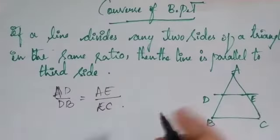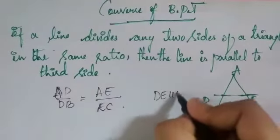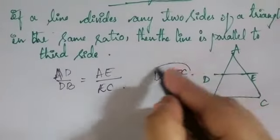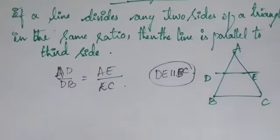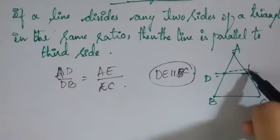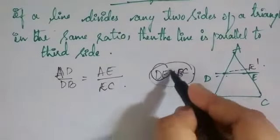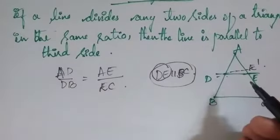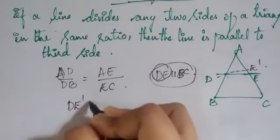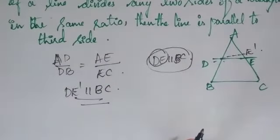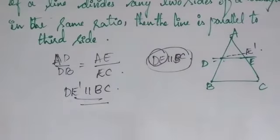We have to prove that DE is parallel to BC. To do this, we assume DE is NOT parallel to BC, and instead construct a point E' such that DE' is parallel to BC. Using this construction as our assumption, we will prove that DE must indeed be parallel to BC.